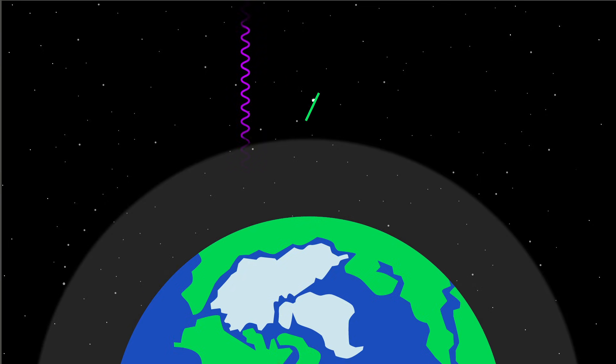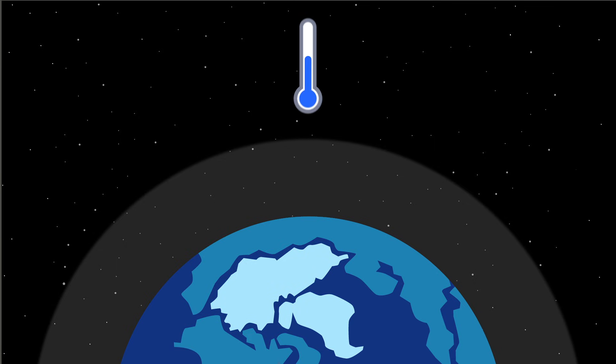It protects us from a lot of the Sun's energy, but also traps some that gets through so that, for example, at night temperatures don't fall that much, especially if it's cloudy.